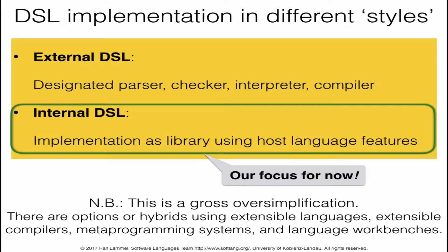We want to implement the domain-specific language, and there are two major styles: an external DSL or an internal DSL. Our focus here is the internal DSL, where we essentially implement the domain-specific language as a library in some host language. An external DSL would provide a designated parser — a completely standalone implementation. Here we want to focus on implementing a DSL transparently as a library in an existing language.